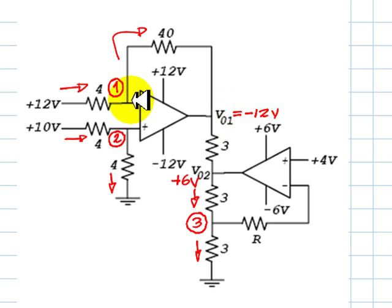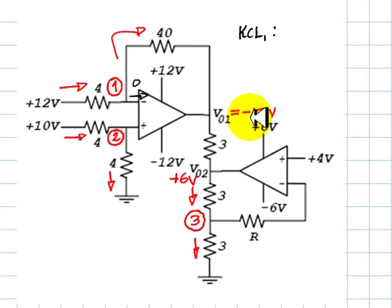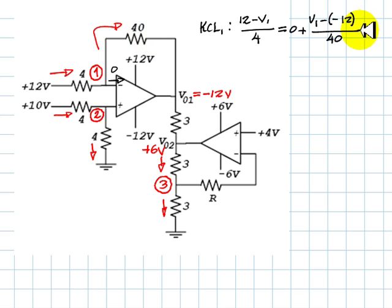I have identified node 1 and node 2, and branch currents already, and node 3 for the second OPAMP. Let's write the necessary KCL equation. I repeat, no negative feedback equation this time, because we are assuming the OPAMP is saturated. KCL for node 1. Currents going in, 12 minus V1 over 4 equals the currents leaving the node. This current continues to be 0A, we know that. And the other current leaving the node is V1 minus minus 12 divided by 40.